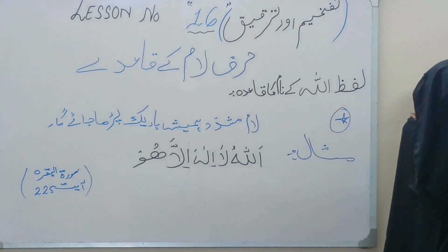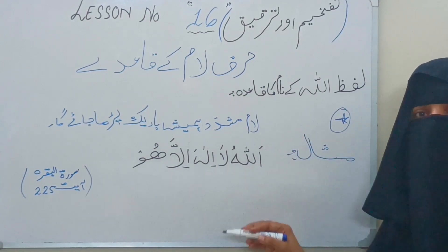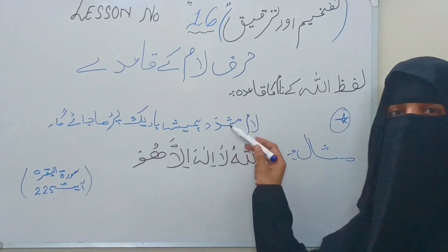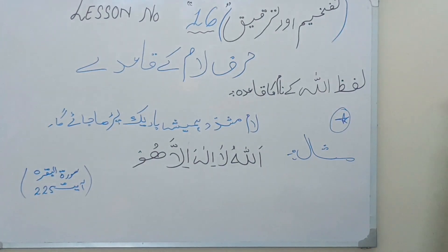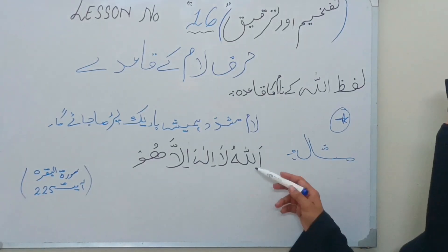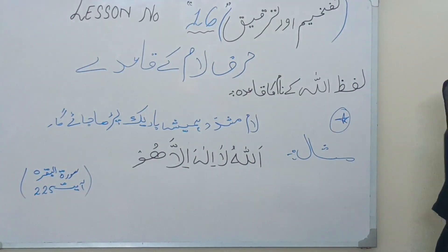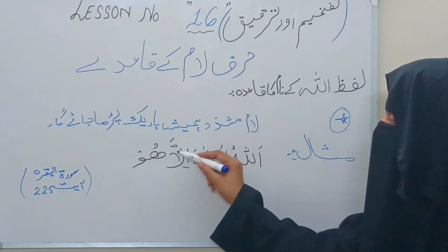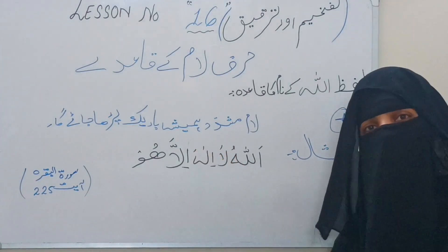اب لفظ اللہ کے نام کے علاوہ اگر ہم لام کی بات کریں تو لام کو کبھی باریک پڑھا جاتا ہے، کبھی موٹا پڑھا جاتا ہے۔ لیکن اگر کوئی simple لام ہوگا تو اس کو ہمیشہ باریک پڑھا جائے گا۔ یہ بات ذہن نشین رکھیں کہ لام مشدد — جس لام پر اوپر تشدید کا سائن ہوتا ہے — وہ لام ہمیشہ باریک پڑھا جاتا ہے، thin تلفظ میں pronounce کیا جاتا ہے۔ اس کا اگزامپل: سورة بقرہ verse 255 — اللَّهُ لَا إِلَهَ إِلَّا اللَّهُ — آیت الکرسی کی فرسٹ لائن ہے۔